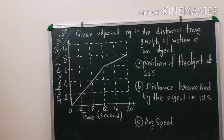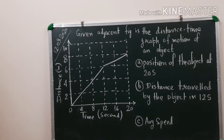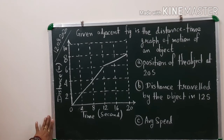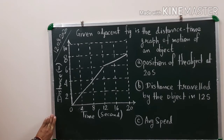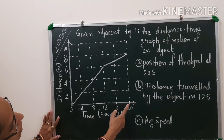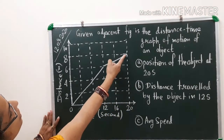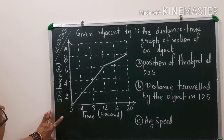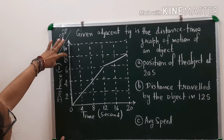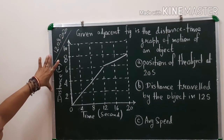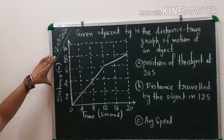The next question: the adjacent figure is the distance-time graph of motion of an object. For the first part, we draw a line at time 20 seconds parallel to the y-axis, then from where it meets the graph we draw a line parallel to the x-axis. This line cuts the y-axis at 8. So the position of the object at 20 seconds is 8 meters.